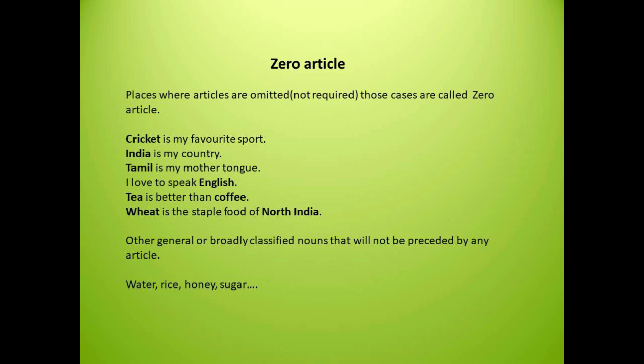Let's suppose this sentence was: Meera lives in the United States. United States is a plural noun. So countries which sound plural, before them we add the article 'the' — for example, the United States, the Netherlands.